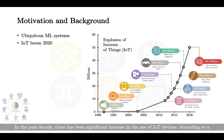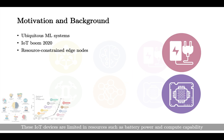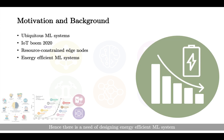In the past decade, there has been a significant increase in the use of IoT devices. According to a survey, by year 2030, the number of such IoT devices is estimated to reach 50 billion. These IoT devices are limited in resources such as battery power and compute capability. Hence, there is a need for designing energy-efficient ML systems.